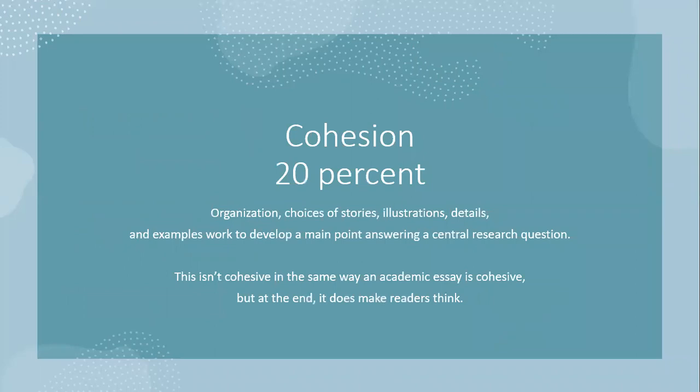You will be graded 20% on cohesion — how do you organize this? Which stories do you choose? Are they linking together, building your main point, answering your central research question? Are they appropriate? Are the illustrations and details guiding readers and building this together? This isn't cohesive in the same way an academic essay is cohesive — with topic sentences and 'therefore,' 'whereas' — but they're cohesive in a way that at the end, everything works together to make readers think.